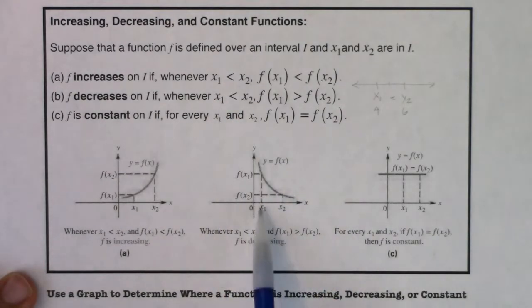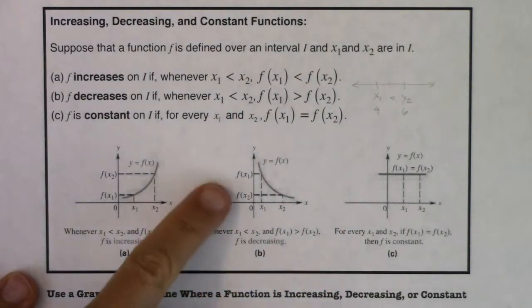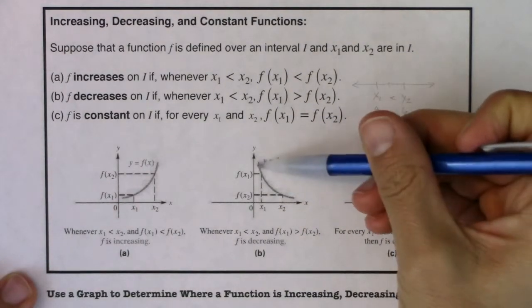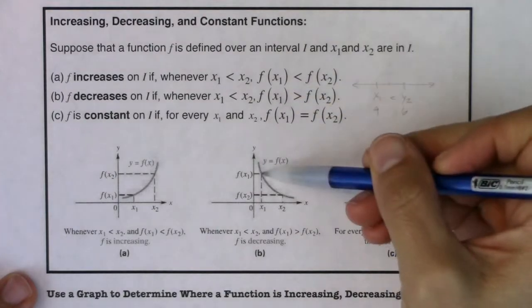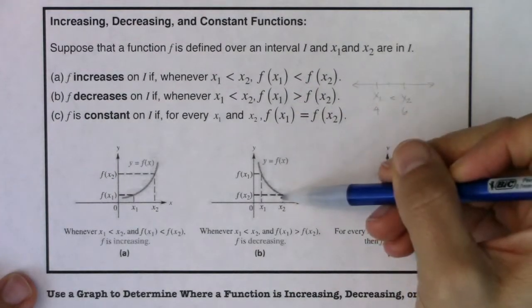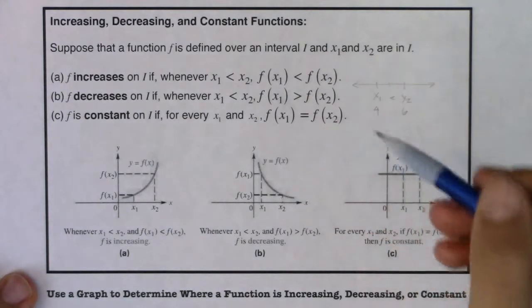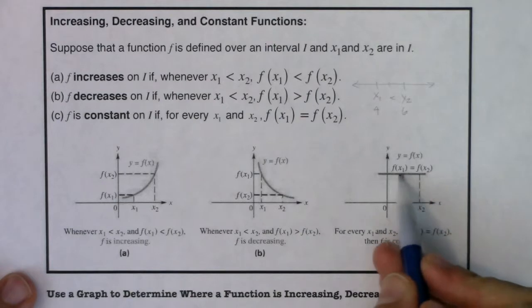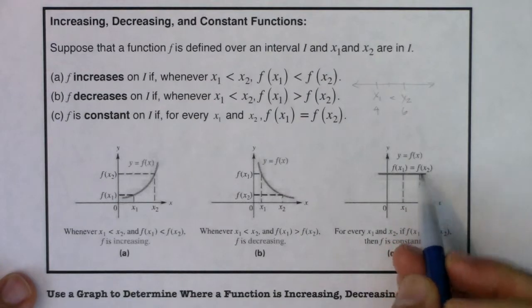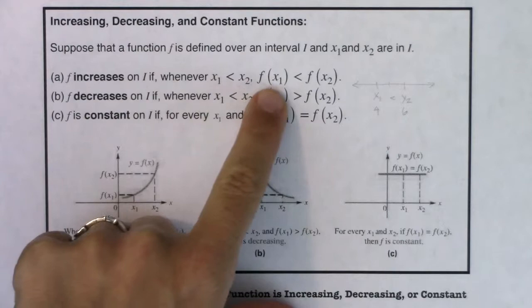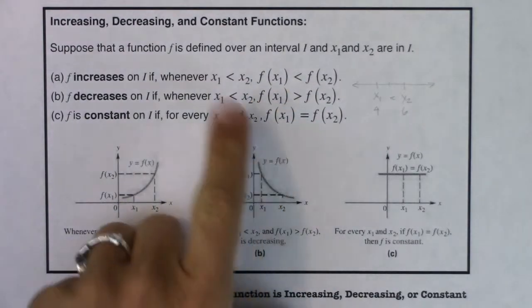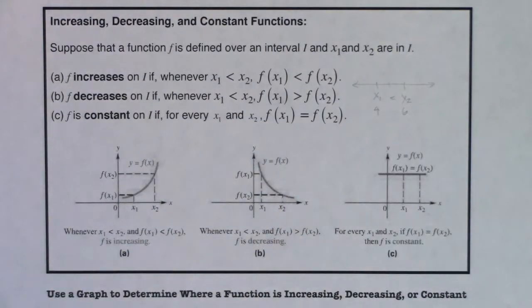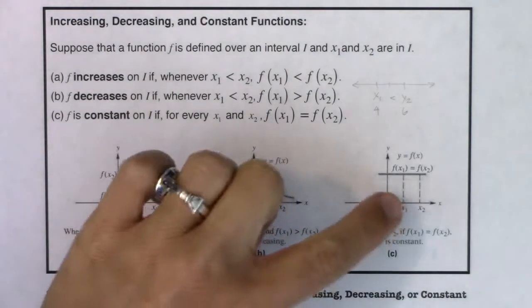Now, on the flip of that, let's say x sub 1 was less than x sub 2. I'm moving left to right. I think you'll see here that my function values are getting smaller. I'm going from up to down. Or f of x sub 1 was greater than f of x sub 2, because I decreased. And then I'm constant when I have x sub 1 and x sub 2 where their function values are equal. So that's what this is referring to. As I move left to right, I move down to up. As I move left to right, I move up to down. As I move left to right, they're equal. Increasing, decreasing, constant.